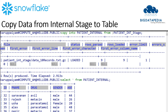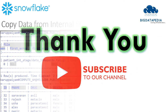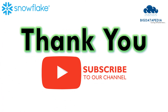Now we can copy the data from the internal stage to the internal table using the COPY command. Here is an example to copy data into the table from the internal stage. Once data is loaded successfully, we can retrieve it from the table using a SELECT command. This is the way you can copy data from your local path and store it into a table using stages. Please provide your valuable feedback and topic suggestions in the comments, and we will cover them in upcoming videos.